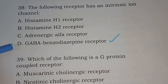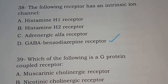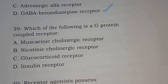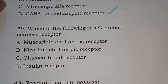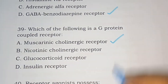We will see in coming chapters how many drugs act through this receptor. Question 39: Which of the following is a G protein coupled receptor? Options are muscarinic cholinergic receptor, nicotinic cholinergic receptor, glucocorticoid receptor, insulin receptor. The correct answer is muscarinic cholinergic receptor.